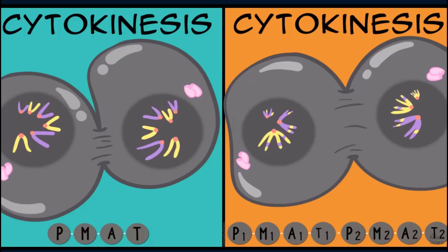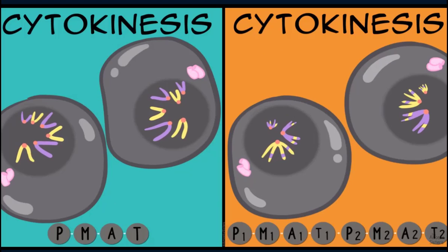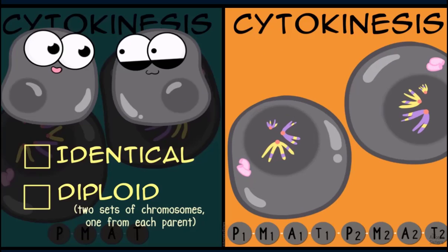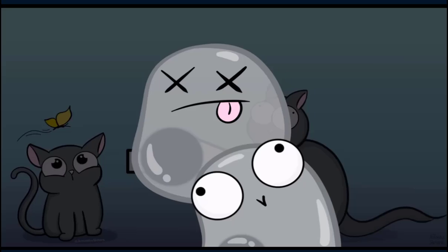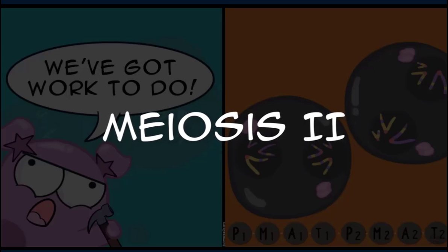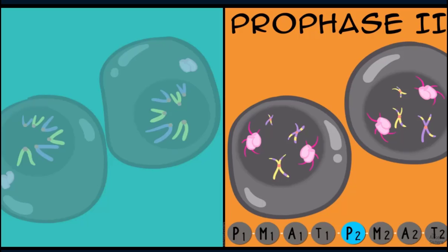In telophase of mitosis and telophase one of meiosis, chromosomes are at opposite ends and new nuclei form on each side. Cytokinesis follows to split the cytoplasm. At the end of mitosis and cytokinesis, we have two identical diploid cells — in humans, both with 46 chromosomes — which is important for organism growth and replacing damaged cells. Onto meiosis two: in prophase two, chromosomes condense in both cells, but without homologous pairs and without crossing over.